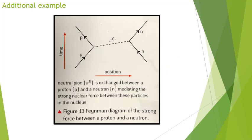This example looks at the strong force between a proton and a neutron. The strong force is very important inside the nucleus. Here's a proton and here's a neutron — the exchange particle in this case is a neutral pion exchanged between them, mediating the strong nuclear force in the nucleus between these two particles.